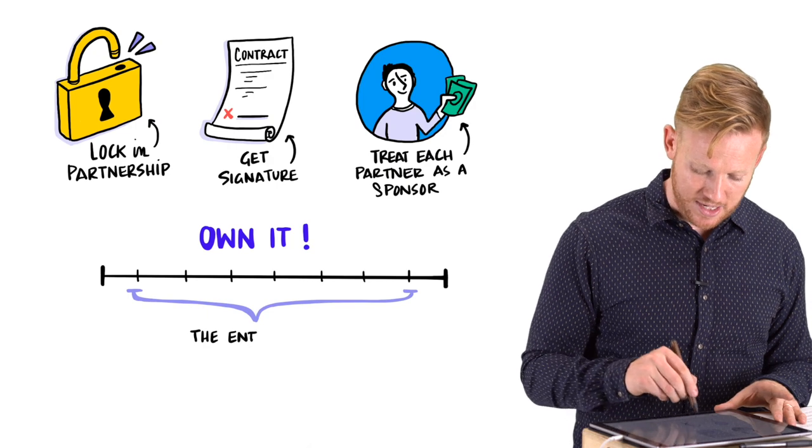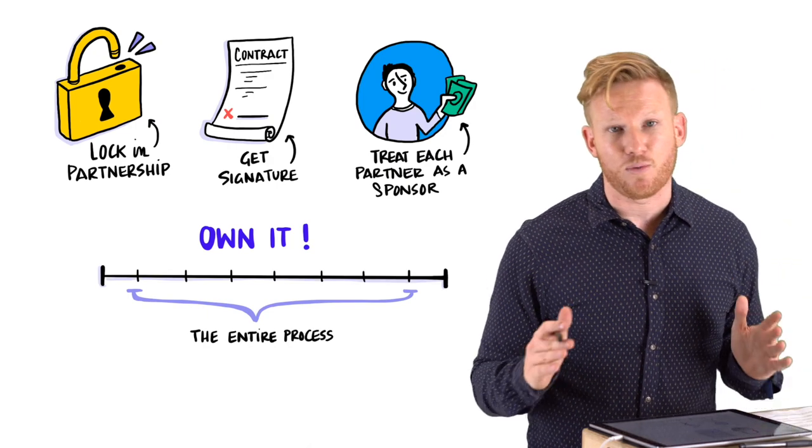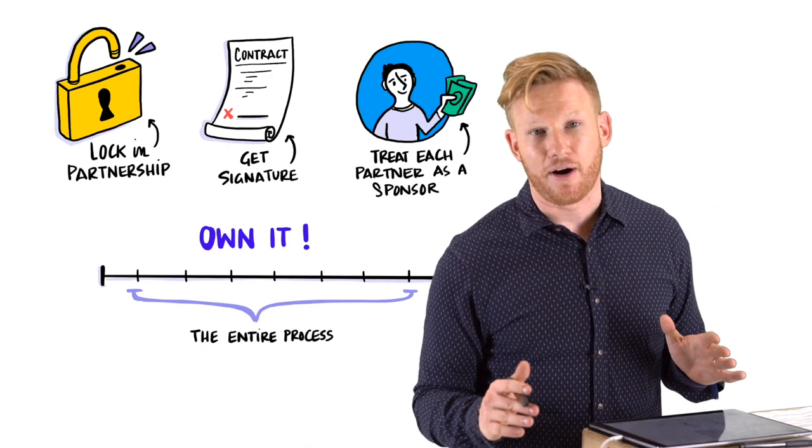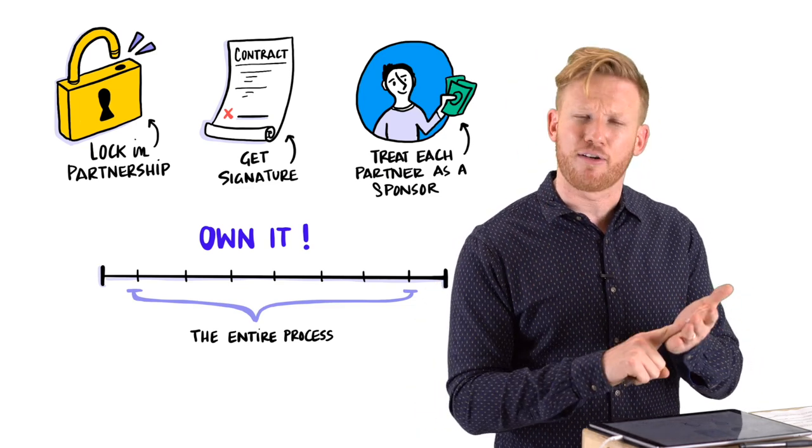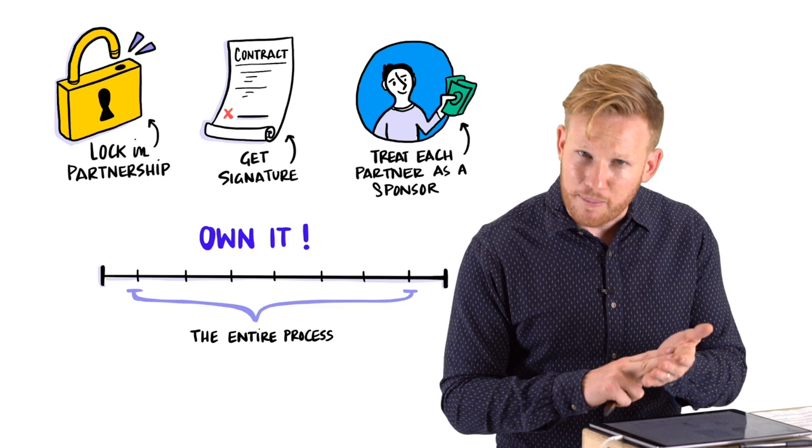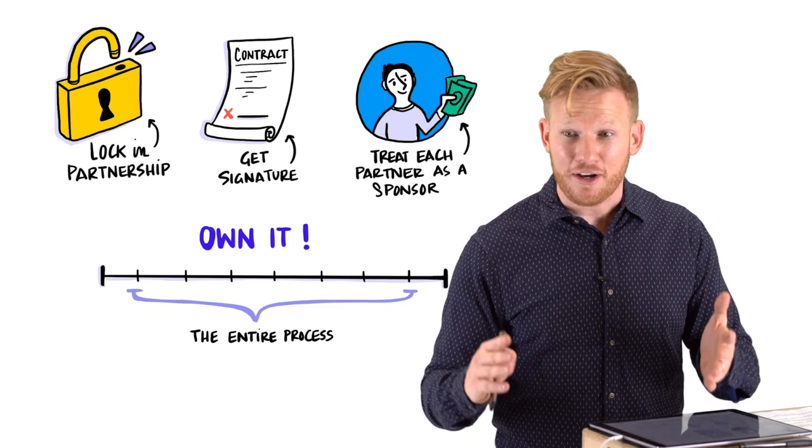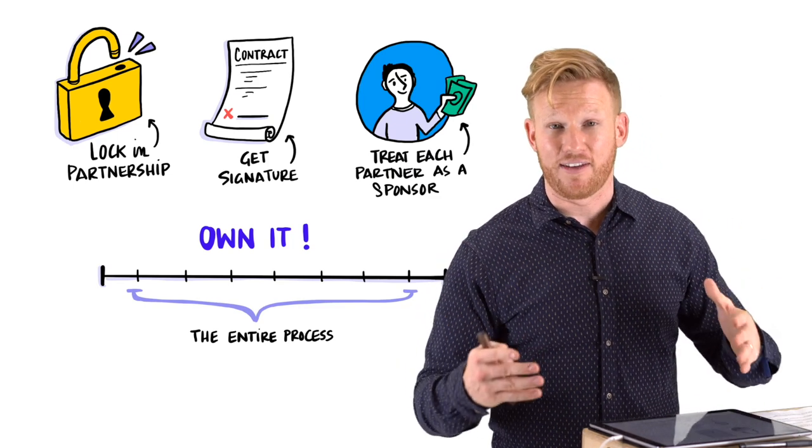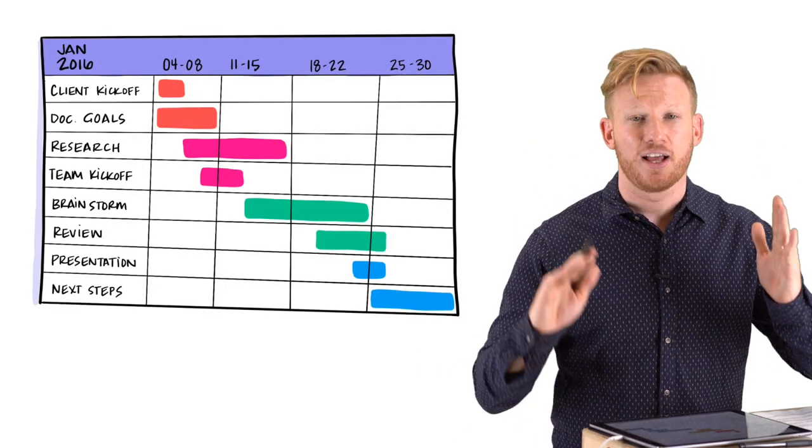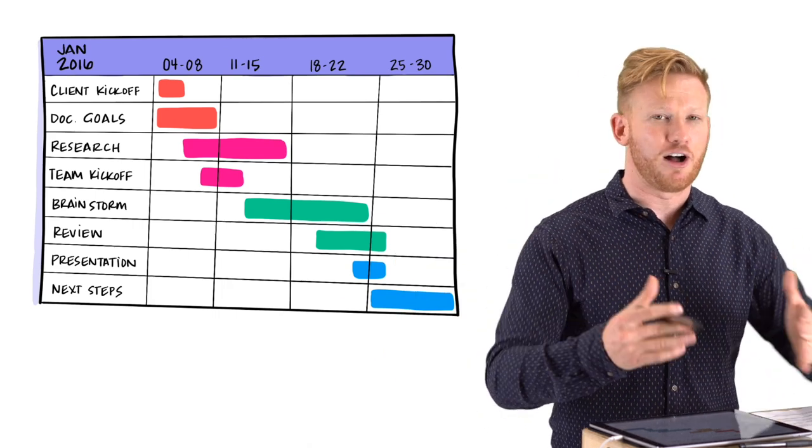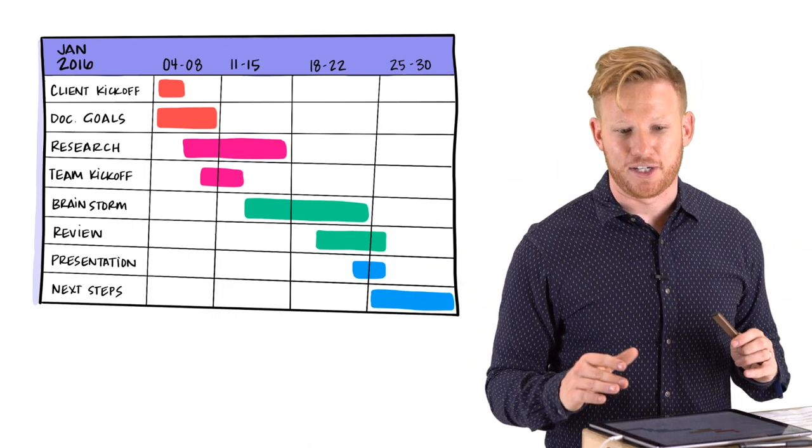And last but not least, own it. Own the entire process. I have found that the best way to really get the most out of a partnership is to put one person on your team on that partner. Make sure that reminder email goes out. Make sure they bring their brand VIPs. Make sure that they have strong collateral at the event, that their booth is set up on time. It's that type of stuff giving them a very clear and thoughtful Gantt chart, leading them through that process that really squeezes all the juice out of a potential partnership.